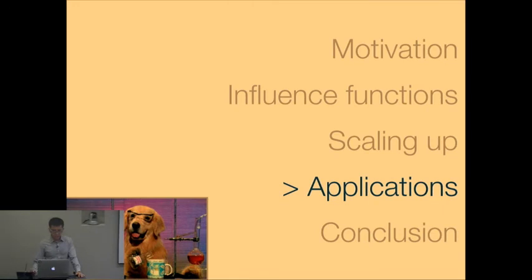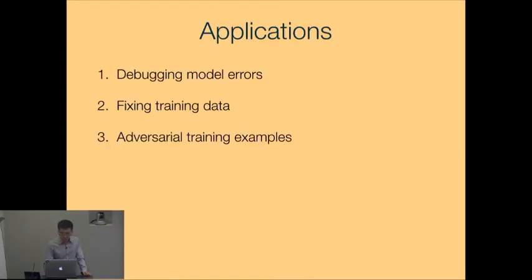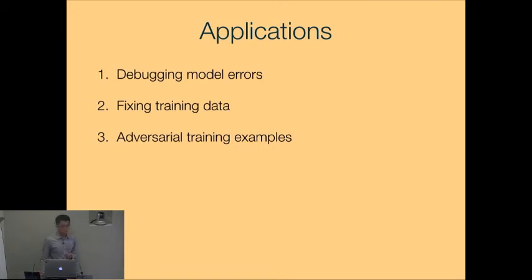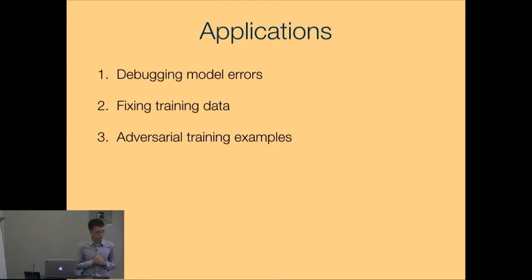Now let me get through the applications. We have seen how to calculate influence fairly efficiently and actually use it on real world models. So what good does this do? I'll go through three different examples: one is to debug errors in the model, two is to fix noisy or mislabeled training data, and the third involves adversarial training.